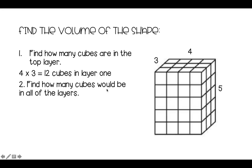Now, how many cubes would be in all of the layers? Now there's five layers. And to work out how many would be in five layers, we're going to go 12 times 5, which gives us 60 cubes in total. Therefore, the volume equals 60 units cubed.